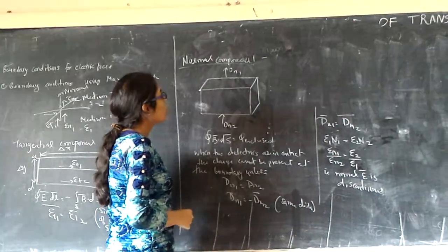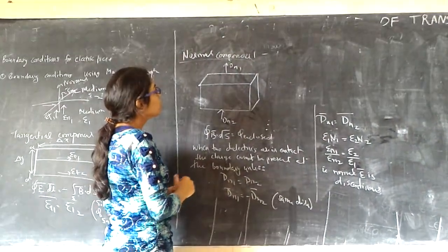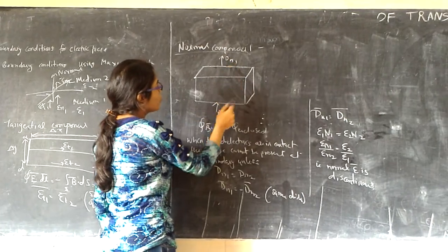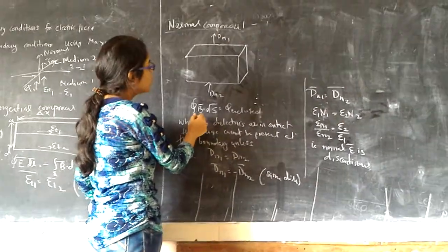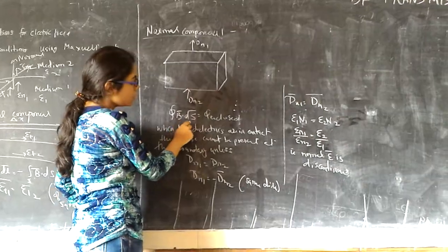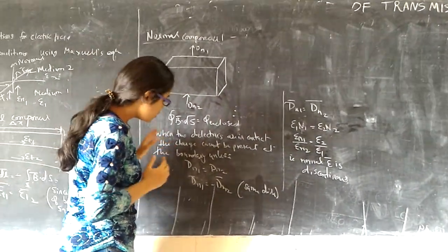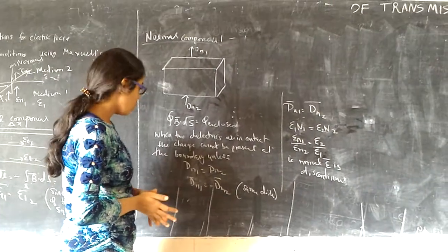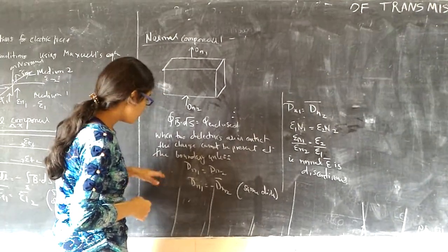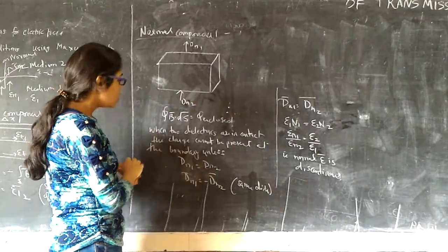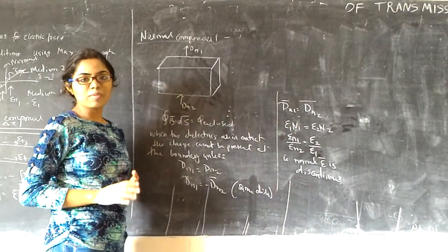Now the component in normal component. The formula for this: closed integral D bar dot DL equals to Q enclosed. When two dielectrics are in contact, free charge cannot be present at the boundary. When two dielectrics are present, no charge is present.